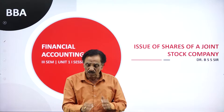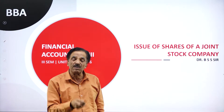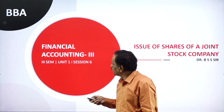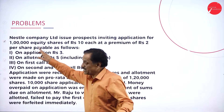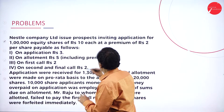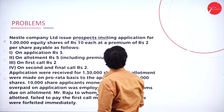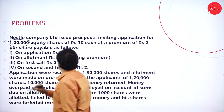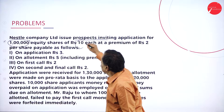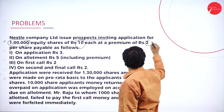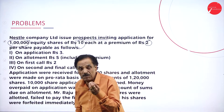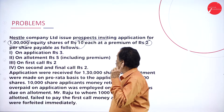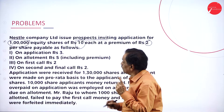Today we are going to solve a very good problem on issue of shares. Nestle Company issued a prospectus inviting applications for 1 lakh equity shares of rupees 10 each at a premium of rupees 2. Payable: rupees 3 on application, rupees 5 on allotment which includes the premium of 2 (real money is 3, excess is 2), rupees 2 on first call, rupees 2 on final call.